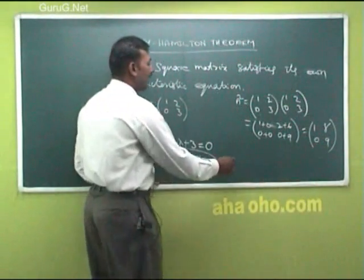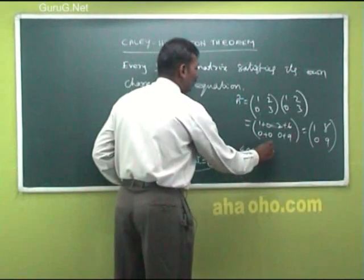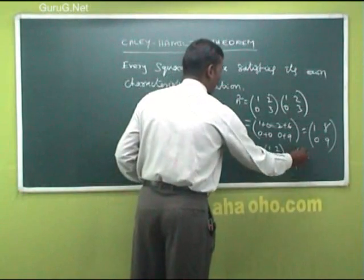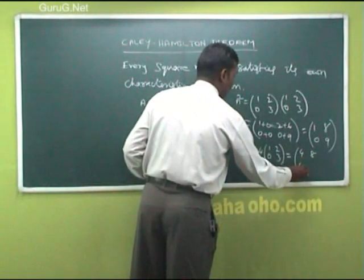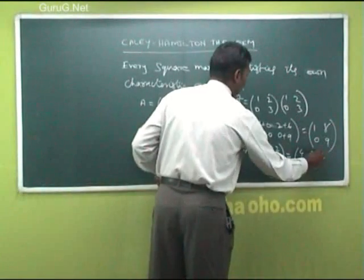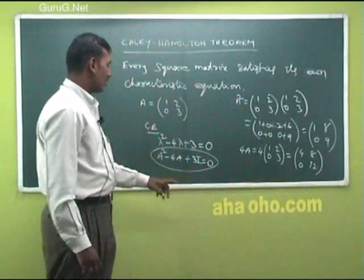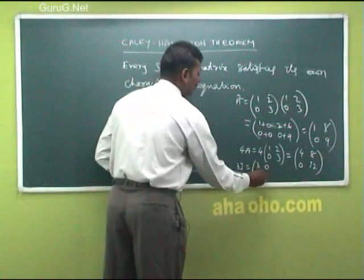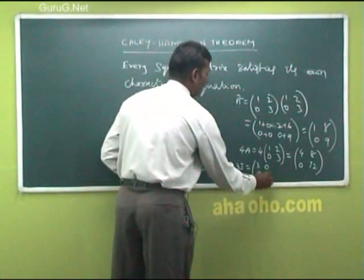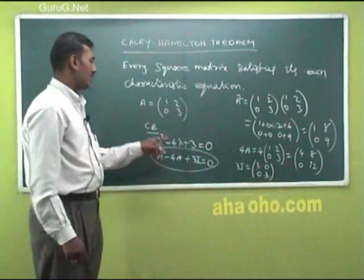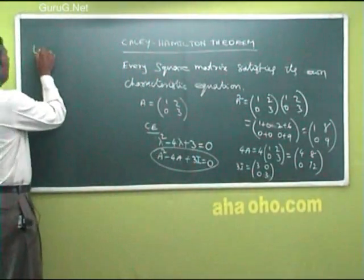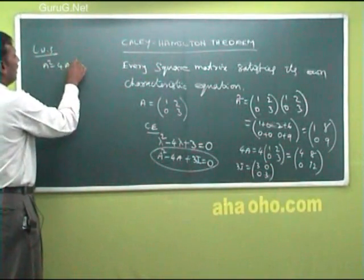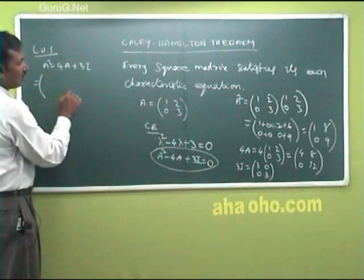Then 4A: 4 into the given matrix equals [0, 4; 8, 12]. Then 3I equals [3, 0; 0, 3]. Substituting these values in the equation A squared minus 4A plus 3I, we take the left-hand side.